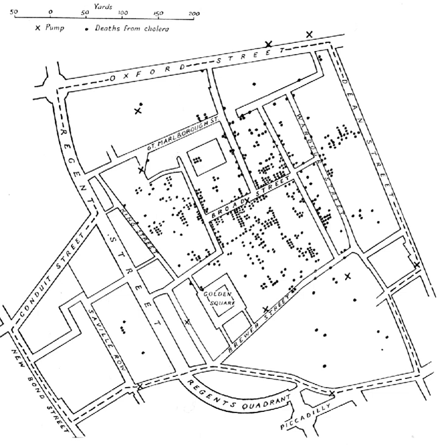Spatial sampling involves determining a limited number of locations in geographic space for faithfully measuring phenomena that are subject to dependency and heterogeneity. Dependency suggests that since one location can predict the value of another location, we do not need observations in both places. But heterogeneity suggests that this relation can change across space, and therefore we cannot trust an observed degree of dependency beyond a region that may be small. Basic spatial sampling schemes include random, clustered and systematic.